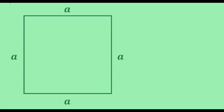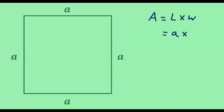Now, let us have a look at why these formulas work. Consider a square and let the length of each side be A. Note that every square is a rectangle, so we can use the formula for the area of a rectangle, which is length times width. In the case of a square, the length equals A and the width also equals A. So we plug those values in and we get A times A, which is simply A squared. So we can see that the area of a square is A squared.